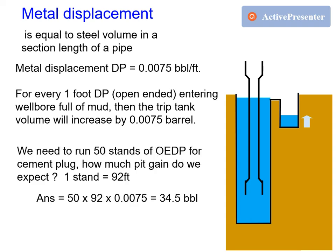If we run 50 stands of open-ended drill pipe to set a cement plug, and the length of each stand is 92 feet, then we will expect a gain in the trip tank of 50 multiplied by 92 multiplied by 0.0075, equal to 34.5 barrels.